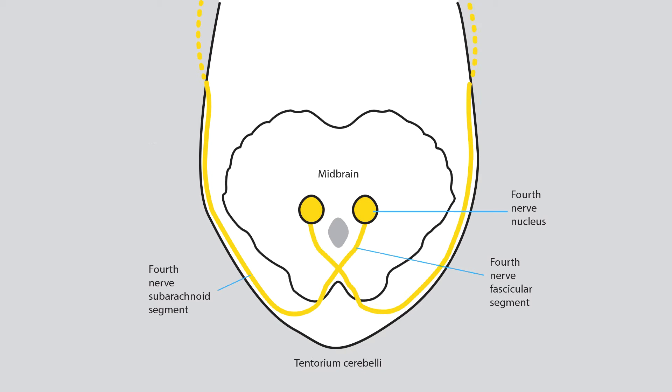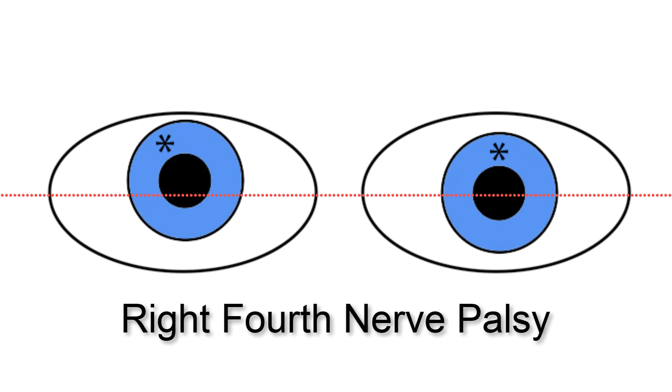Here is an axial view of the course of the fourth nerve. It can be damaged anywhere along this route. This is what a right fourth nerve palsy looks like. The pattern of misalignment will obey the three-step test.